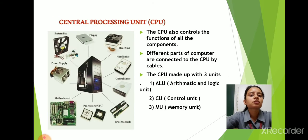Next is Central Processing Unit, CPU. CPU controls the functions of all the components. CPU is the brain of computer. Different parts of CPU are: first, ALU, Arithmetic and Logical Unit, which does all the calculations of computer and gives us the result. Second is Control Unit, which controls all the parts of computer.